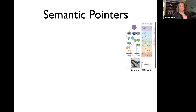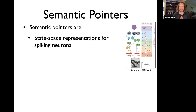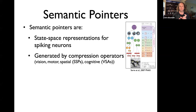You might be wondering what semantic pointers are — it's the name of the architecture. Semantic pointers are basically abstract representations that are always implemented in spiking neurons. You can think of them as vectors: people working with neural networks have long talked about vectors and vector spaces. We have methods for encoding them in neurons and manipulating them with neurons.